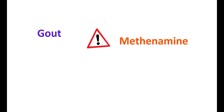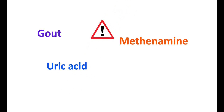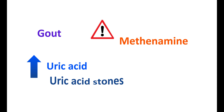In people with gout, methenamine should be used carefully. In such people, uric acid levels are elevated and methenamine can increase the formation of uric acid stones in the urine, so it should be used with caution.